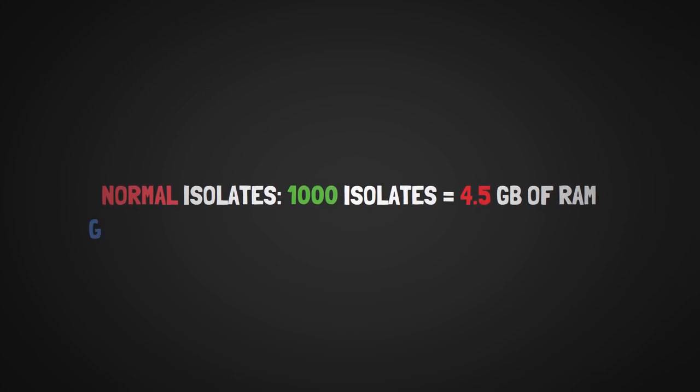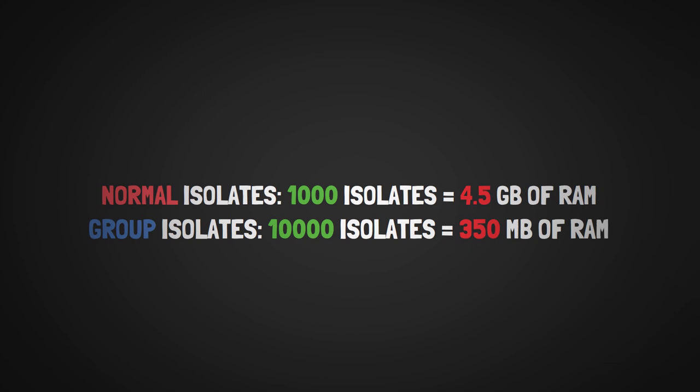Dart developers benchmarked this new change, and if previous standalone isolates took approximately 4.5GB of RAM for a thousand spawned isolates, well, these isolate groups are able to spawn 10,000 isolates for just under 350MB of RAM. Now, if this doesn't seem efficient to you, I don't know what else is.